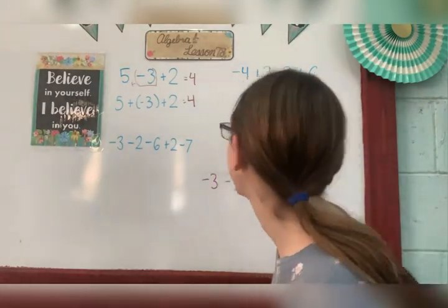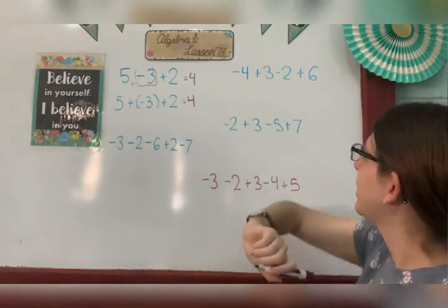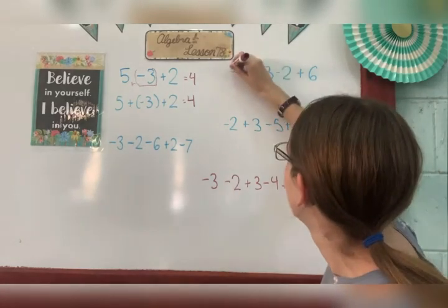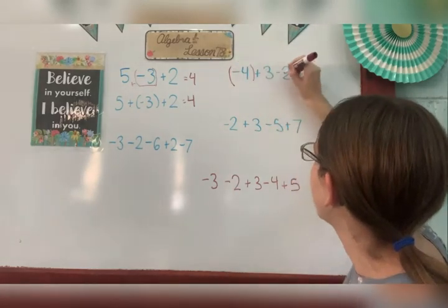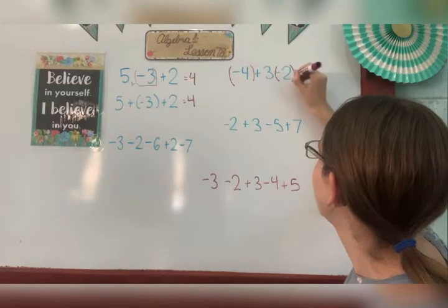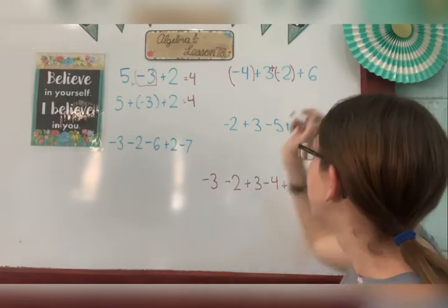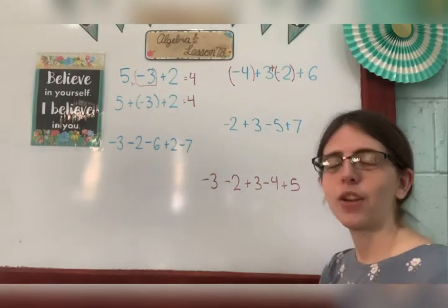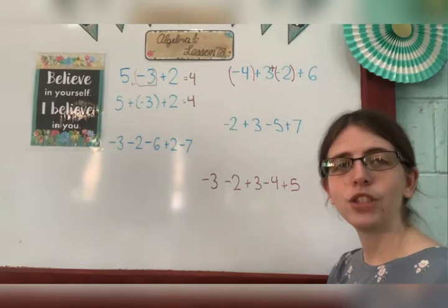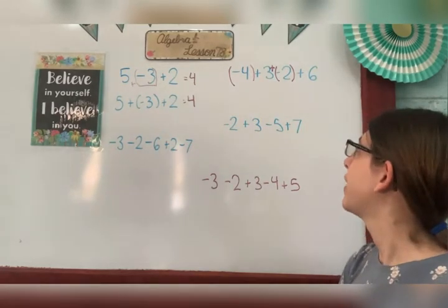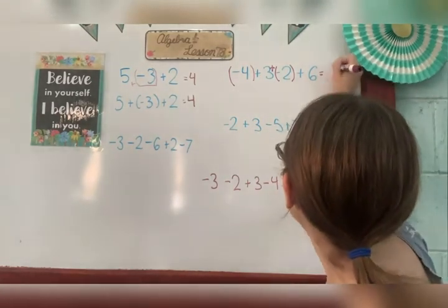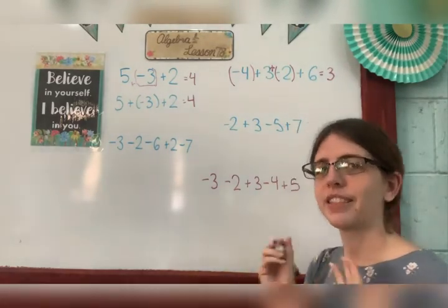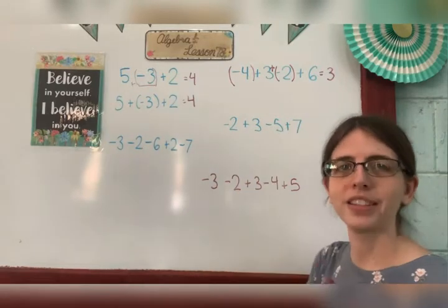For example, negative 4 plus 3 minus 2 plus 6. So here I have negative 4 in the beginning. Then I have plus 3 minus 2 is the same as plus negative 2 plus 6. So now I have negative 4 plus 3. I know that's negative 1. Negative 1 plus negative 2 is negative 3. And negative 3 plus a positive 6, I know it's positive 3. Because 6 minus 3 is 3. Take the sign of the larger absolute value, 6. So it's positive 3.